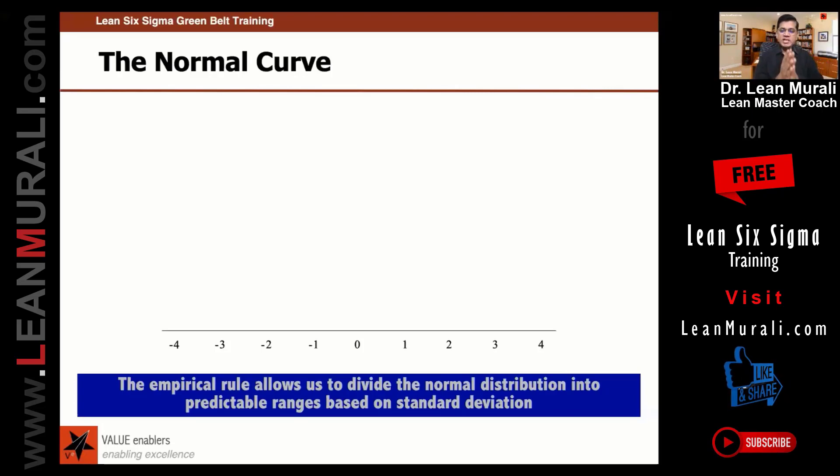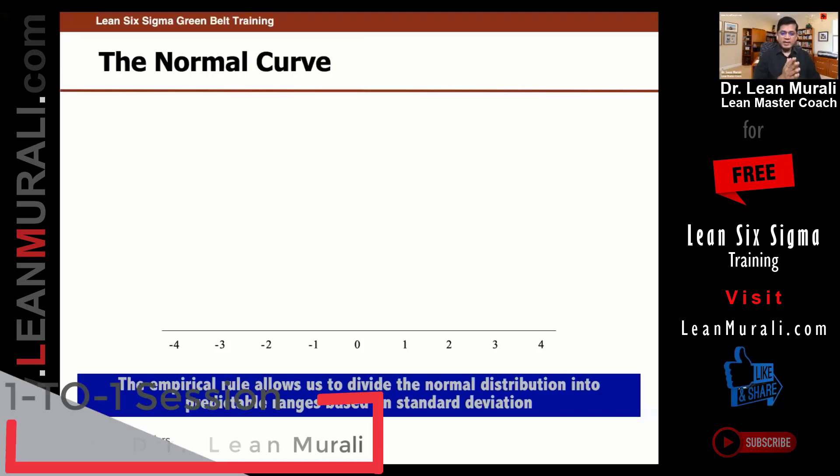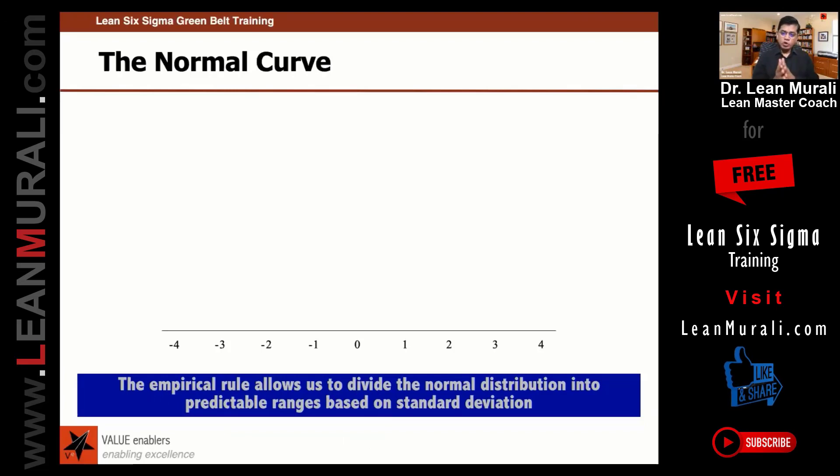Which means suppose if the standard deviation is 10, zero to one is one standard deviation, zero to two is two standard deviations, zero to three is three standard deviations. Similarly, zero to minus one is one standard deviation, zero to minus two is two standard deviations and zero to minus three is three standard deviations.